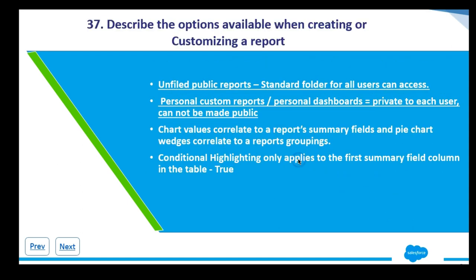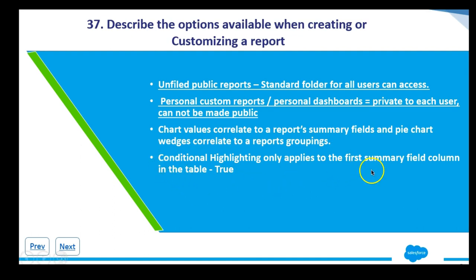Looking at the options available when creating or customizing a report: unfiled public reports are standard folders that all users can access. Personal custom reports and personal dashboards are private to each user and cannot be made public. Chart values correlate to report summary fields, and pie chart wedges correlate to report groupings — this is very important. You can also use conditional highlighting, which applies to the first summary field column in the table.